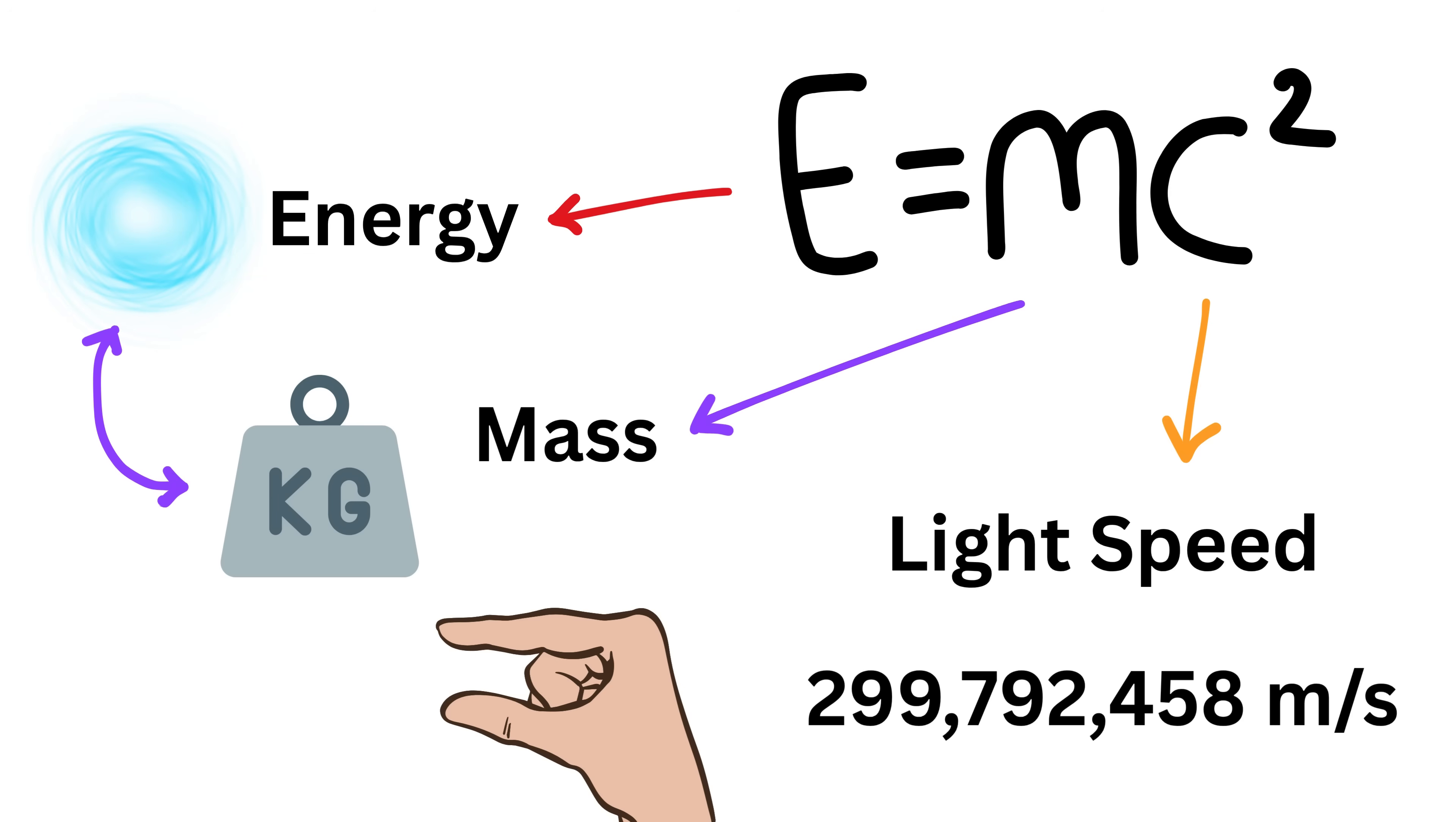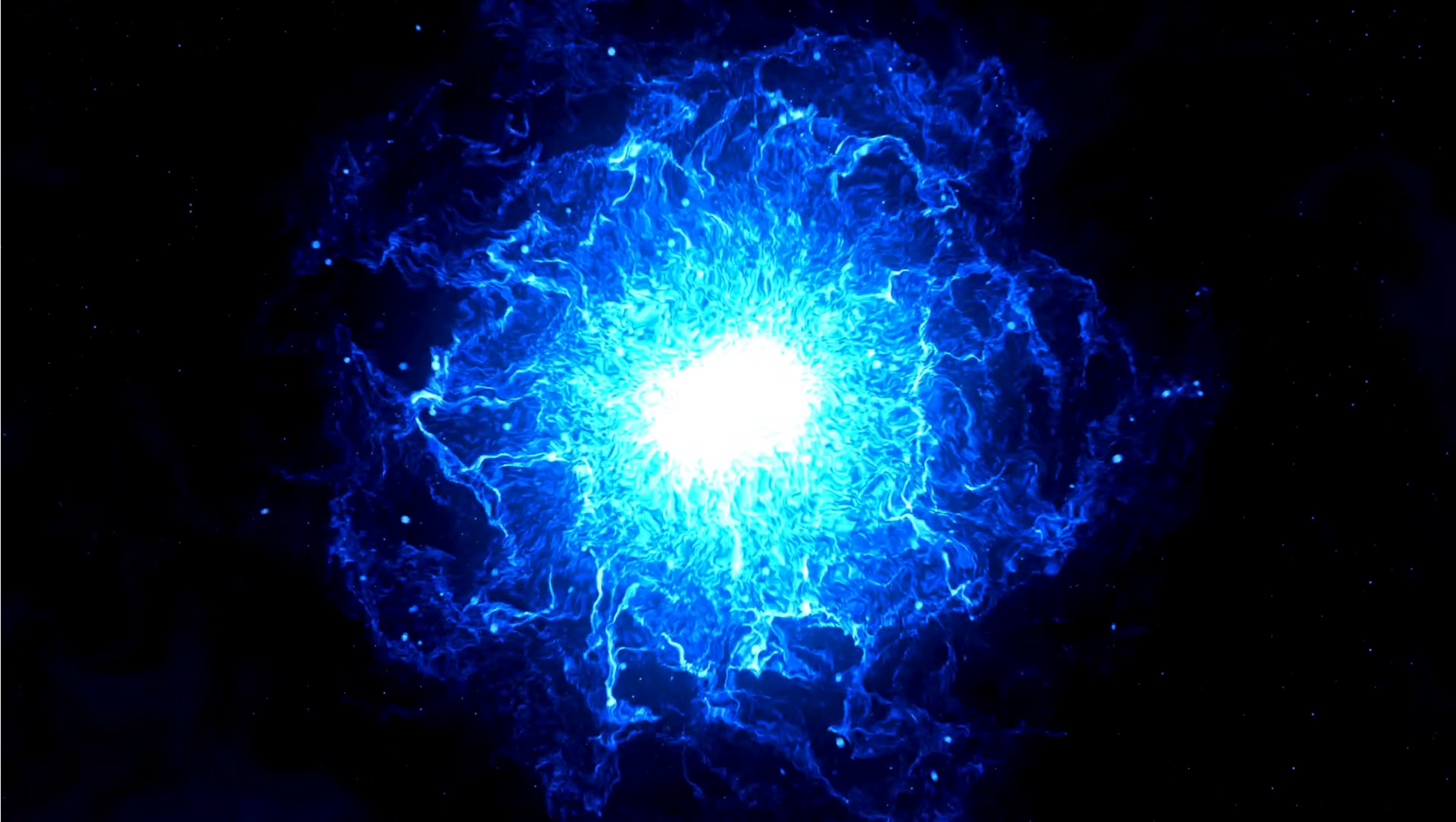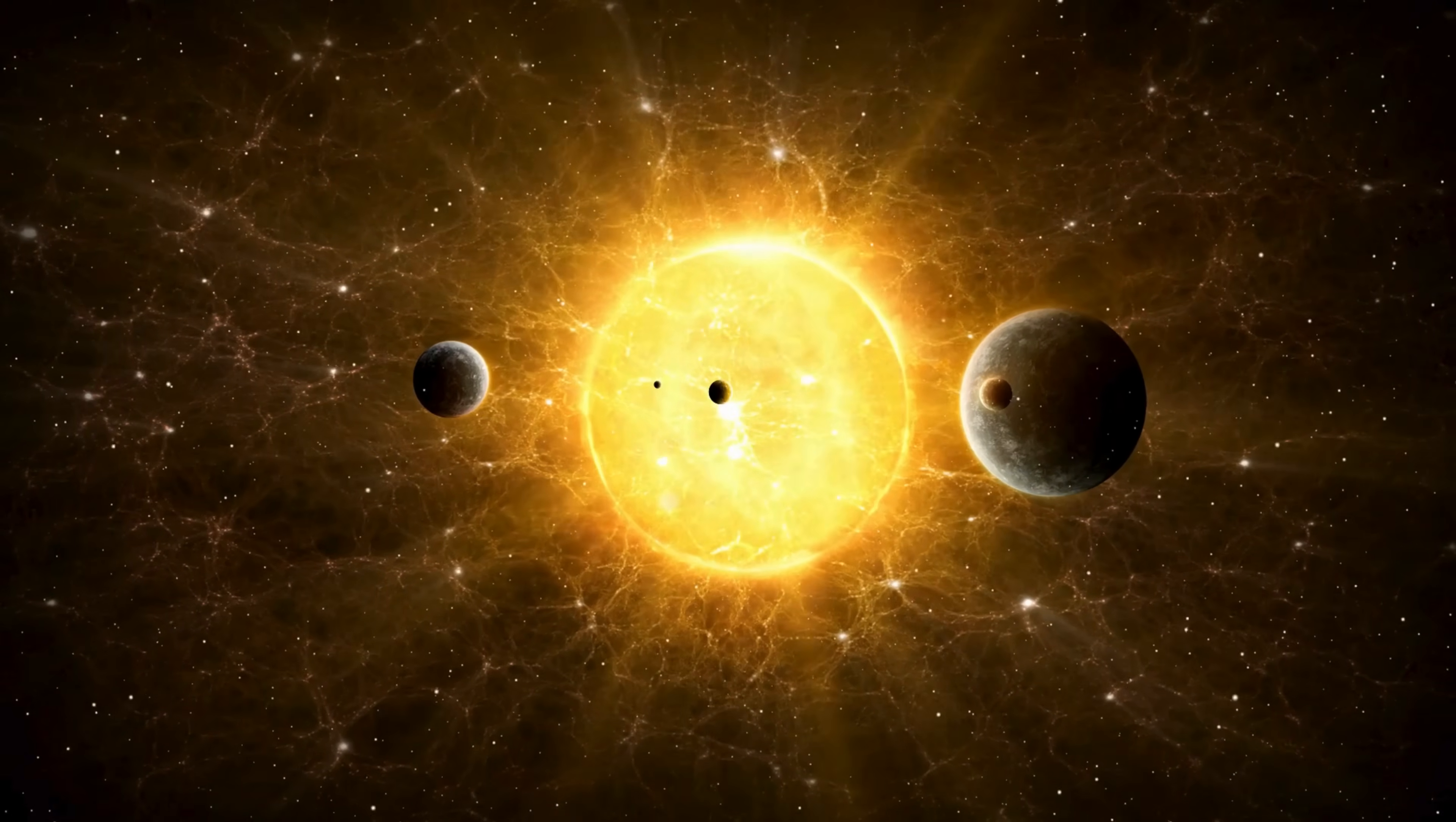If you take even a tiny bit of mass and multiply it by the square of the speed of light, you get a huge amount of energy. This is the basic idea behind how the sun produces energy.